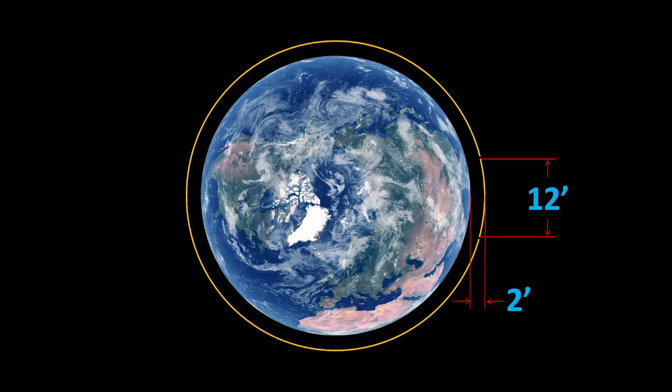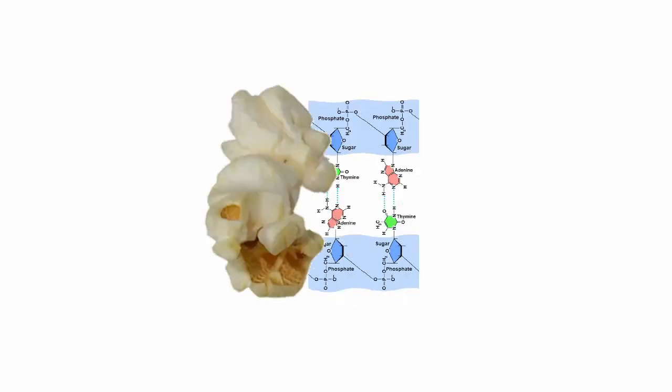Our sun would fit 900 times across the diameter of the star Betelgeuse. A little micron is 10,000 hydrogen atoms long, or 100 DNA molecule widths. So, speaking of the DNA molecule, let's apply this analogy now.